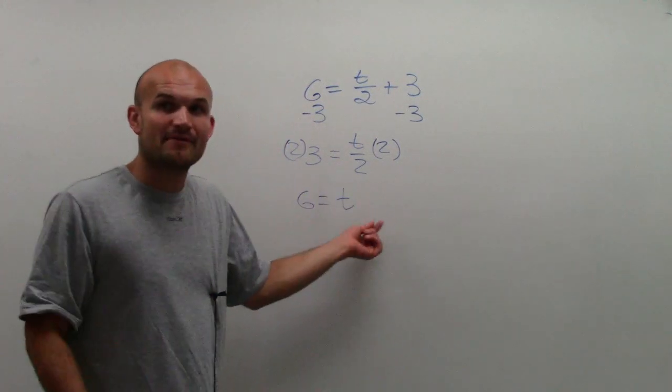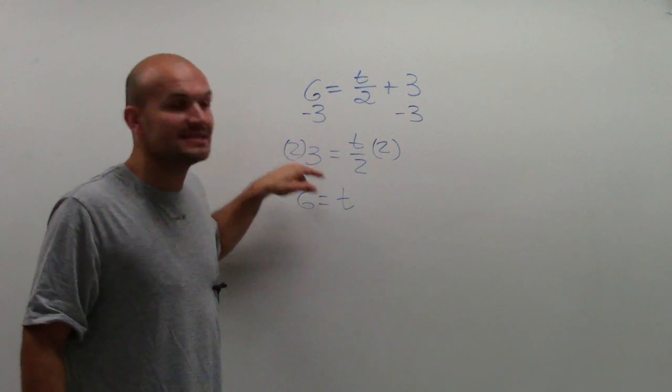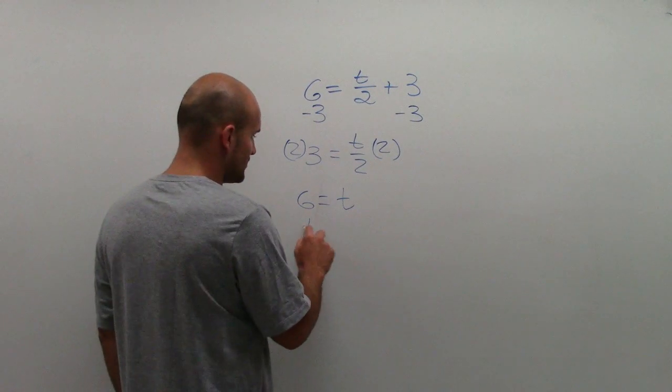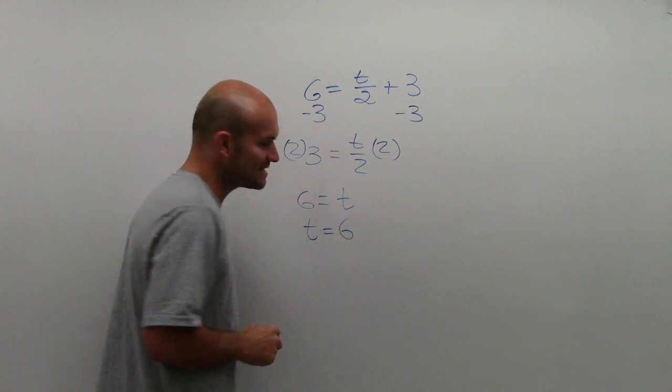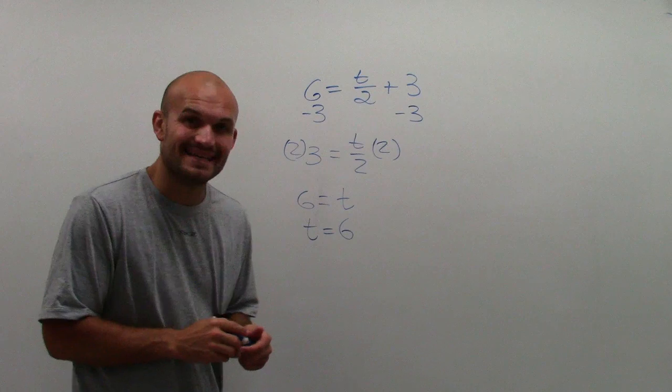So you can see, now that my variable is isolated, I say 6 is equal to the value of t. Or, as we like to write, just rewrite it as t equals 6.